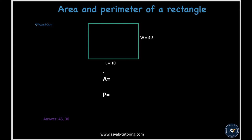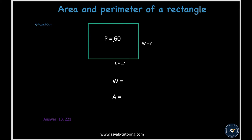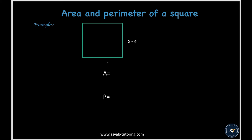Here are a few practice problems you can try yourself using the formulas. In one problem, area and perimeter need to be found given length and width. In another, area is given and you need to find the width. In the last, perimeter is given and you need to find width and area. Follow the same steps as before.